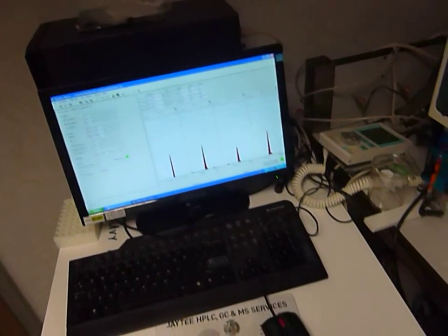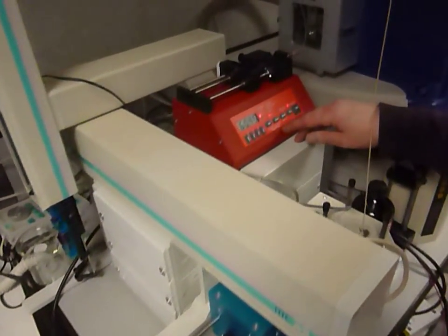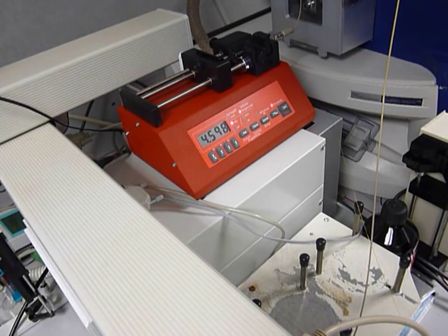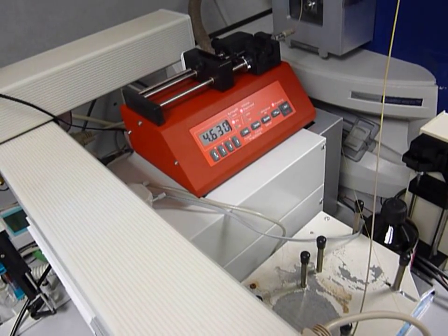And then also, you can check what volume you've dispensed by pressing volume twice. This is the actual volume that's actually going into the mass spectrometer.